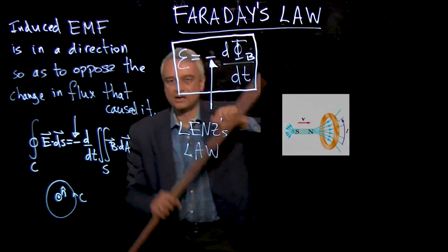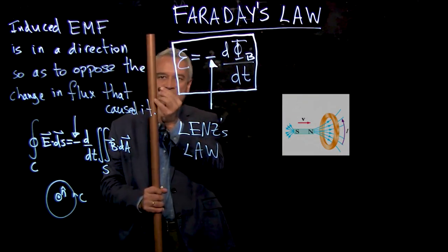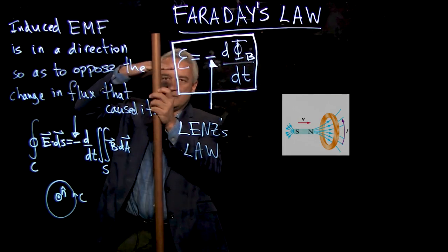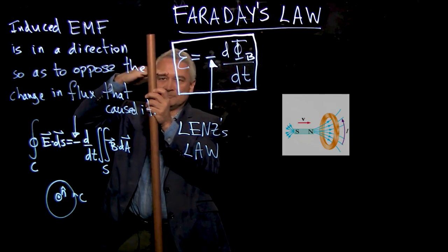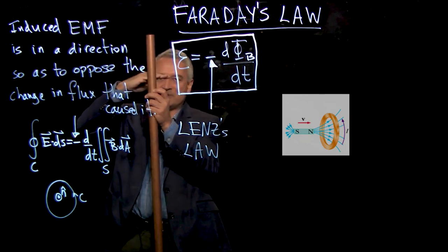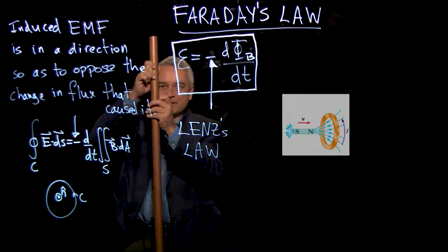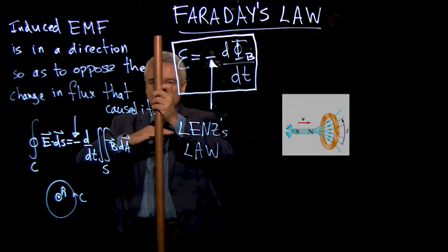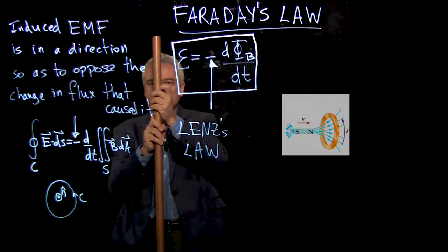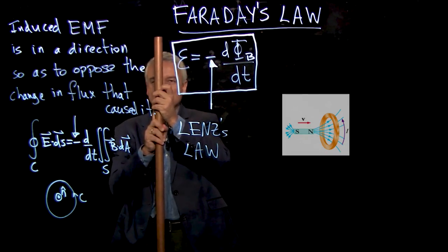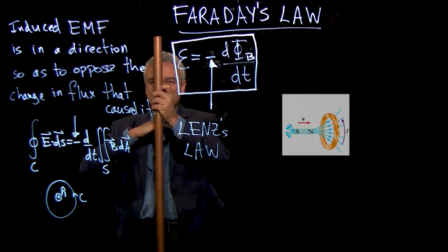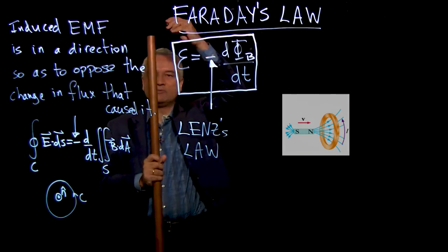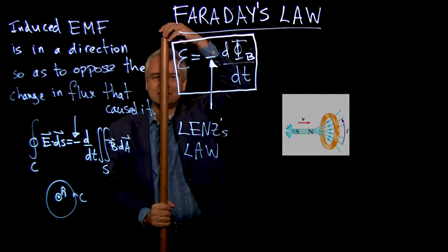So let's come back to our copper pipe. Now we have the whole story. Let's imagine this magnet falling through the pipe at some height. If you think about the loop of copper just above it, there's a current induced in that loop that makes a magnetic field that tries to pull the magnet back up. And if you think of the loop of copper just below it, there's a current induced in that loop that tries to push the magnet upwards. So this upper loop has a current that pulls that way, and the lower loop has a current that pushes that way, and the net result is the magnet falls very slowly.